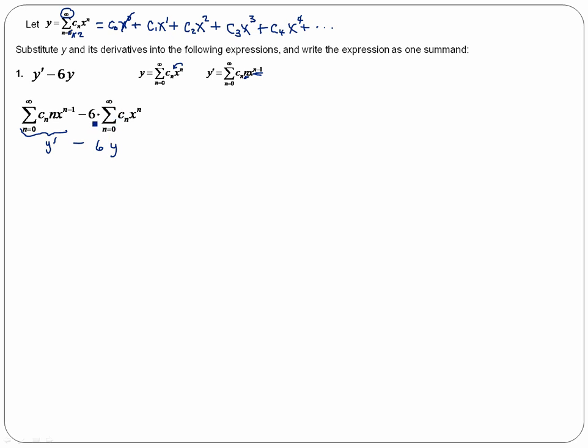And when I combine them, I want to make sure that first, these powers of x are the same, x to the n, x to the n minus 1. I'm going to do a change of variable to get the same exponents. And second, I want to make sure that these summations start and end at the same point. And they do right now, but when we change these powers of x, then you'll see that they don't match up.